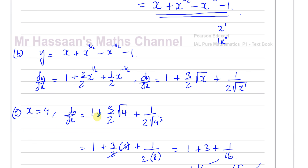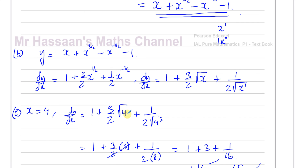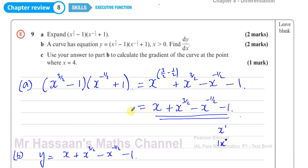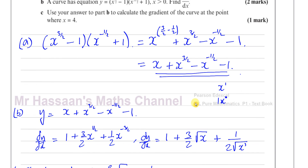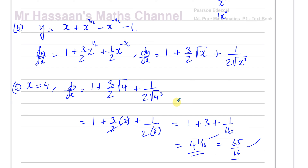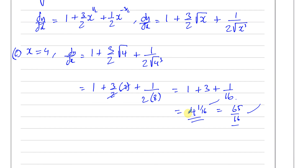Part C was putting x equals 4 into the expression for dy/dx to find the gradient of the curve. dy/dx means the gradient function — when you differentiate, you're finding the gradient function. That's why we substitute x equals 4 to find the gradient of the curve at that point.